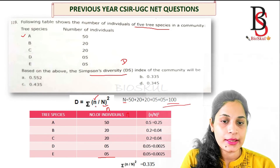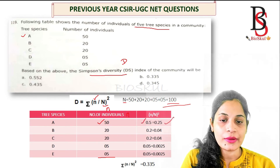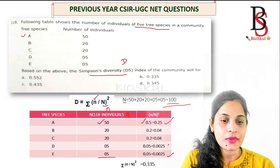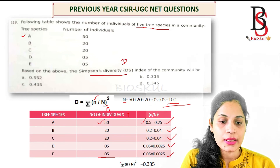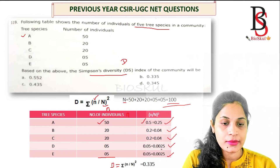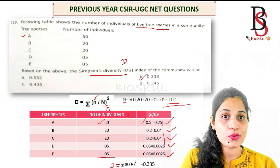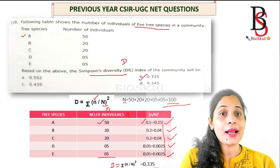Now calculating n/N for each species: for species A, 50/100 = 0.5, and (0.5)² = 0.25. Similarly, the values for species B, C, D, and E are calculated. The summation of all (n/N)² values equals 0.335, so the correct answer is option B. This question carries four marks and is straightforward.